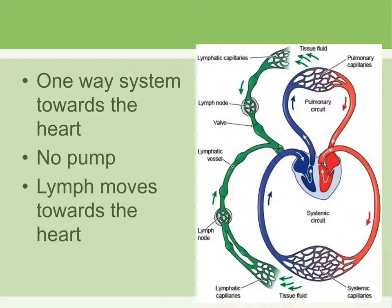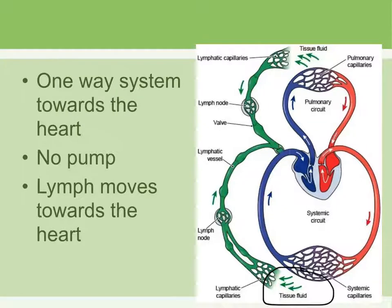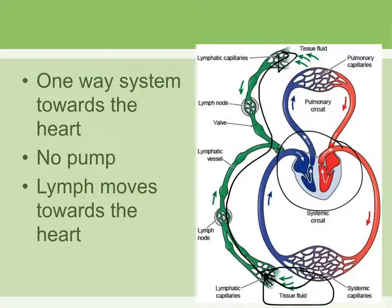Another characteristic of the lymphatic system that is different from the cardiovascular system is that it is only one way. In the cardiovascular system, arteries send blood away from the heart, and veins bring blood back to the heart. Whereas in the lymphatic vessels, they start at the tissue level away from the heart, and the lymph is collected and sent toward the heart — but it never goes away from the heart. There is no pump. The lymph always moves toward the heart, not away from the heart.